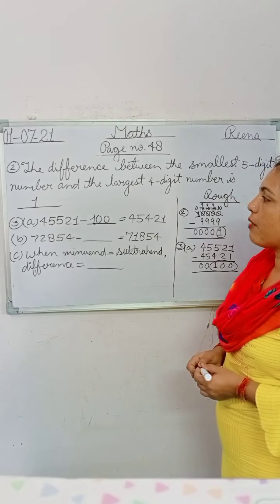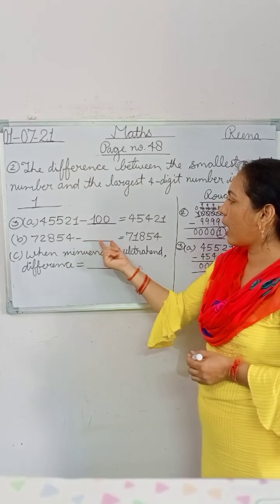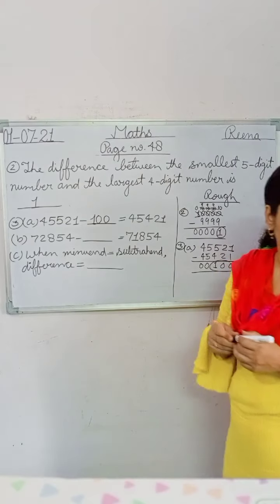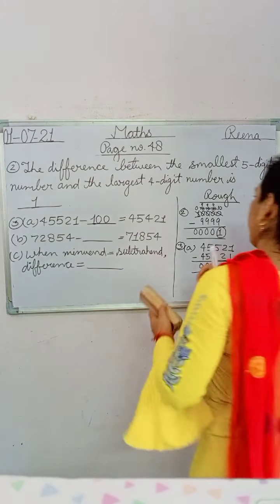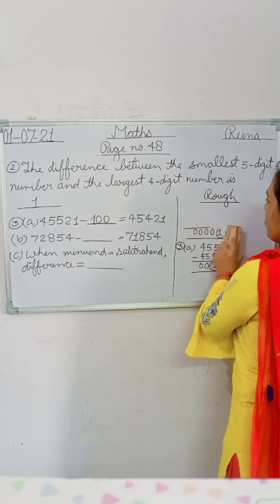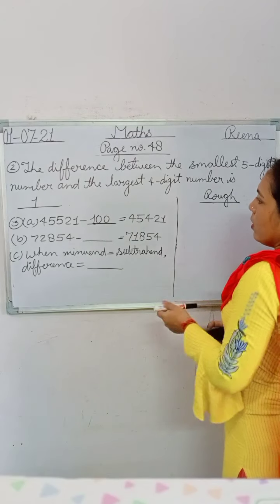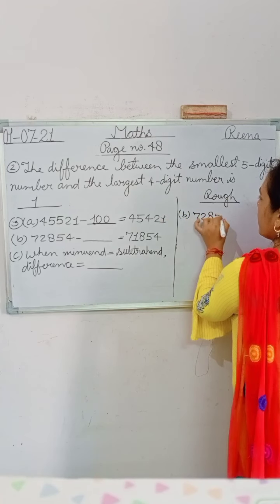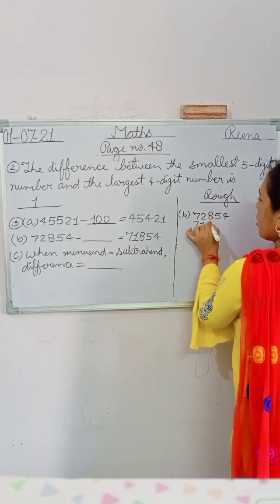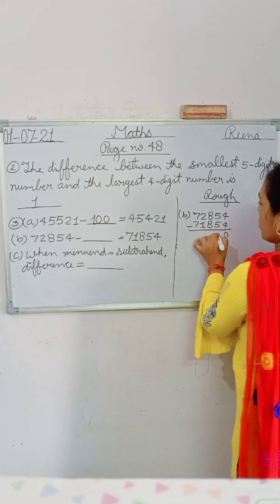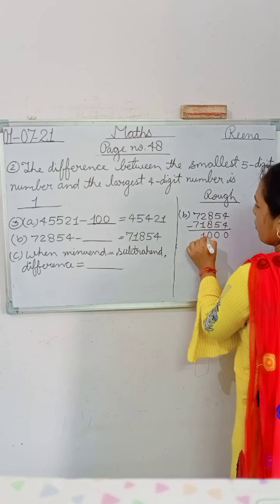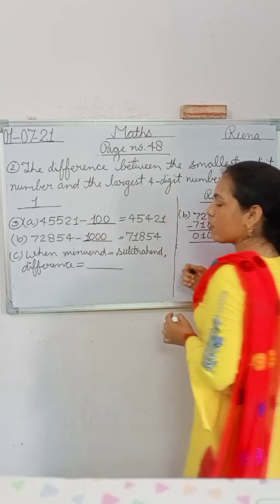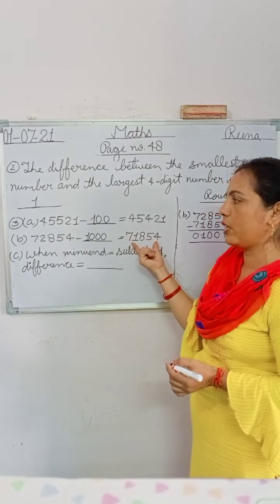In B, you have 72,854 minus blank equals 71,854. Subtract 72,854 minus 71,854: four minus four is zero, five minus five is zero, eight minus eight is zero, two minus one is one, seven minus seven is zero. That means one thousand is your correct answer — when you subtract 1,000 from the given number, you get the right-side number.